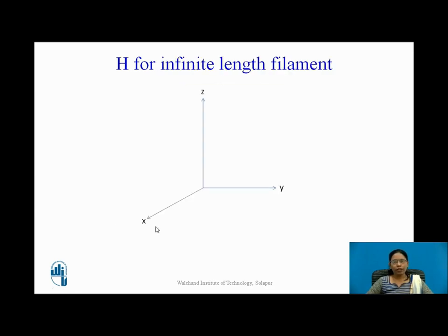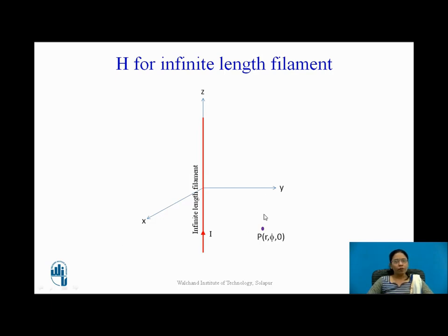To find H for an infinite length filament, I will consider the XYZ axis — a three-dimensional coordinate system. Let us assume an infinite length filament with current I flowing through it. Our intention is to find the magnetic field at point P in the XY plane. The point P has coordinates R, phi, 0 in cylindrical coordinates.